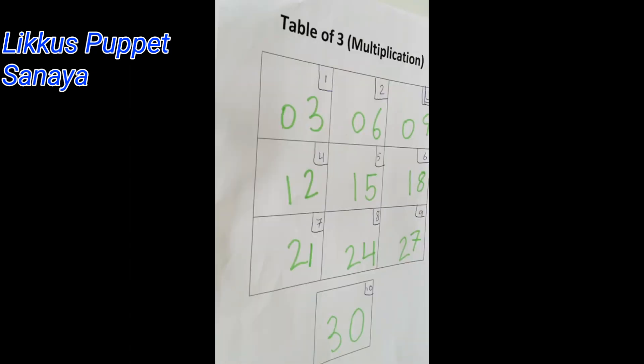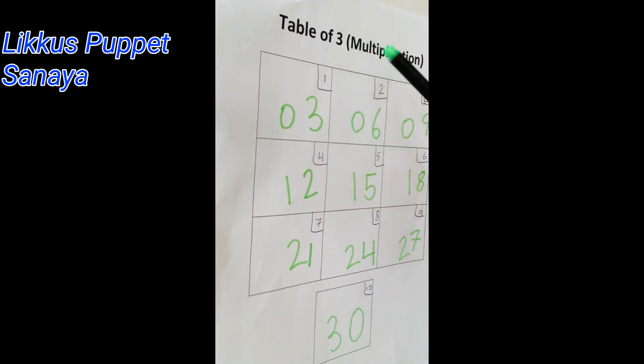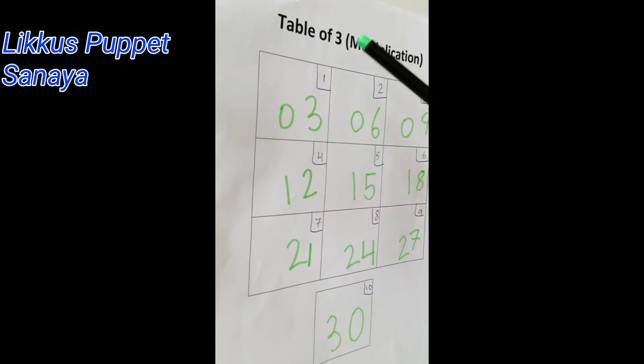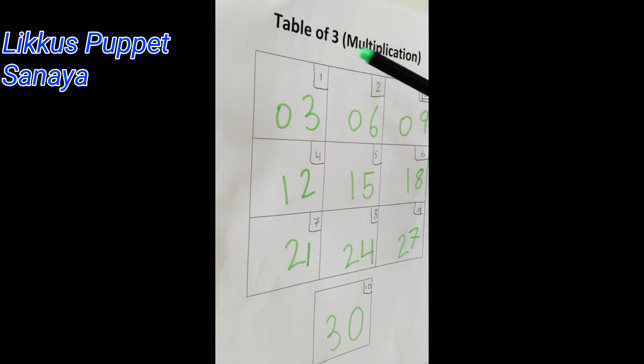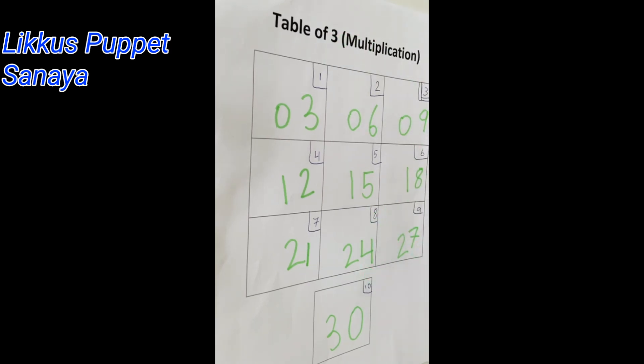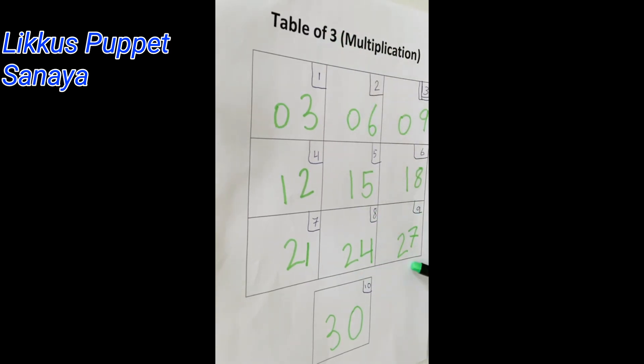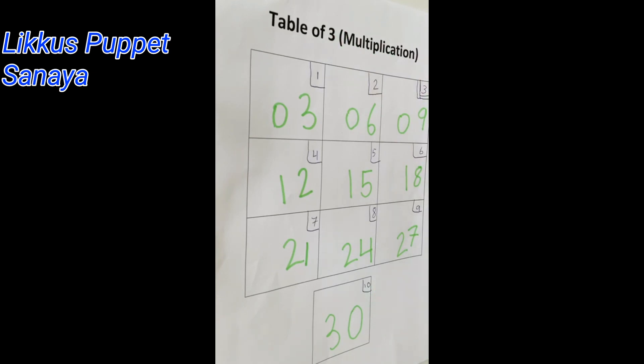So, now let's check the answers. 3 times 1 is 3. 3 times 2 is 6. 3 times 3 is 9. 3 times 4 is 12. 3 times 5 is 15. 3 times 6 is 18. 3 times 7 is 21. 3 times 8 is 24. 3 times 9 is 27. And 3 times 10 is 30.